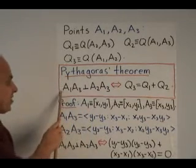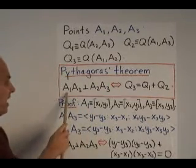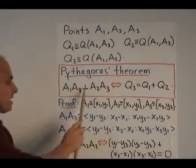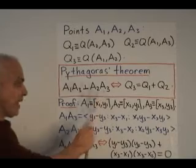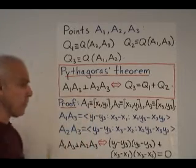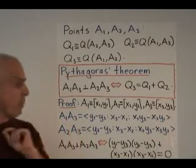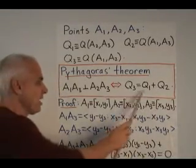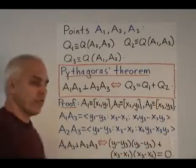Then Pythagoras' theorem states that a1, a3, which is the line through these two points, is perpendicular to a2, a3, the line between these two points, precisely when this relation between the quadrances holds. Q3 equals q1 plus q2.